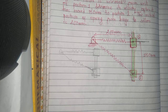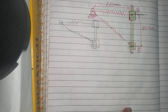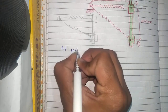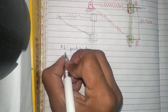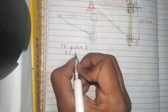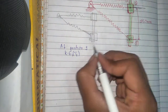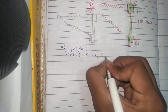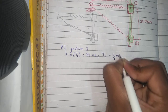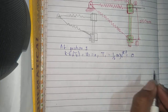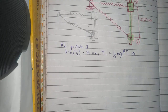Now finding the energy at position one. At position one, kinetic energy T1 equals one half m v1 squared. Since the collar is released from rest, v1 equals zero, so kinetic energy T1 equals zero.